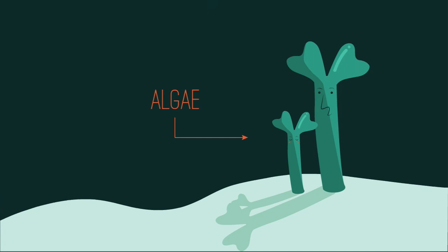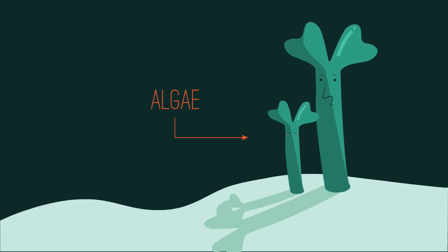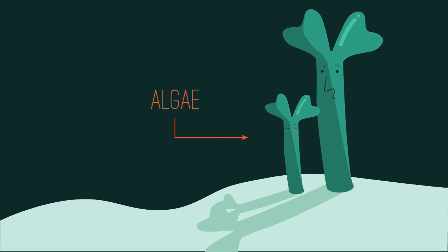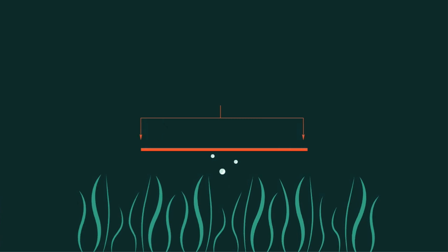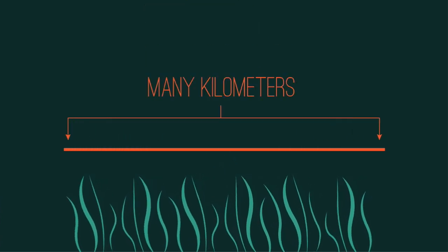...or microscopic aquatic plant organisms, to grow quicker than usual. When they grow too quickly, a phenomenon known as an algal bloom occurs. An algal bloom could span over many kilometers in a large body of water, thus blocking sunlight from reaching other aquatic organisms.